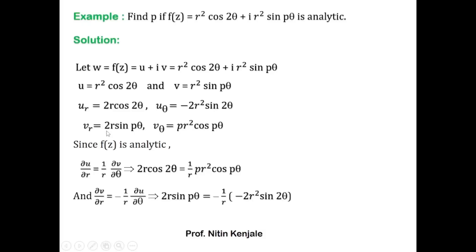Looking at the next equation, ∂v/∂r = -(1/r)·∂u/∂θ. Substituting: 2r·sin(pθ) = -(1/r)·(-2r²·sin(2θ)). The negatives cancel and r simplifies, giving 2r·sin(pθ) = 2r·sin(2θ). Comparing both sides once again, we get p = 2. Therefore, the unknown variable p occurring in the definition of the analytic function f(z) is p = 2.